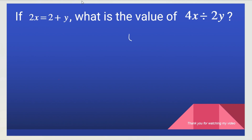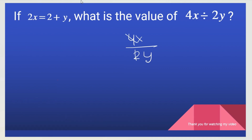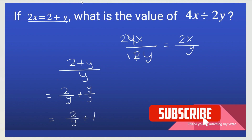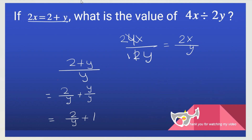Here, we want to figure out 4x over 2y. If we divide them, it's going to be 2x over y. It says 2x equals 2 plus y, so we can write 2 plus y over y. This y is shared with the 2 and the y, so we can write 2 over y plus y over y. We know that y over y equals 1, so the answer is 2 over y plus 1. And that is it for today. Thank you for watching. Don't forget to subscribe, like, and share.